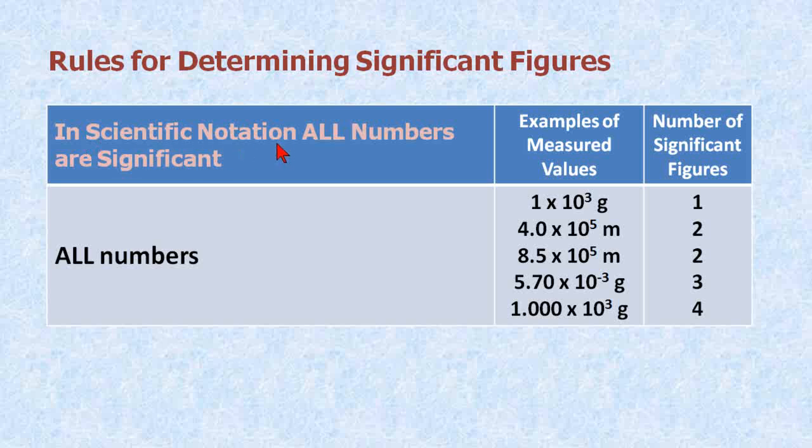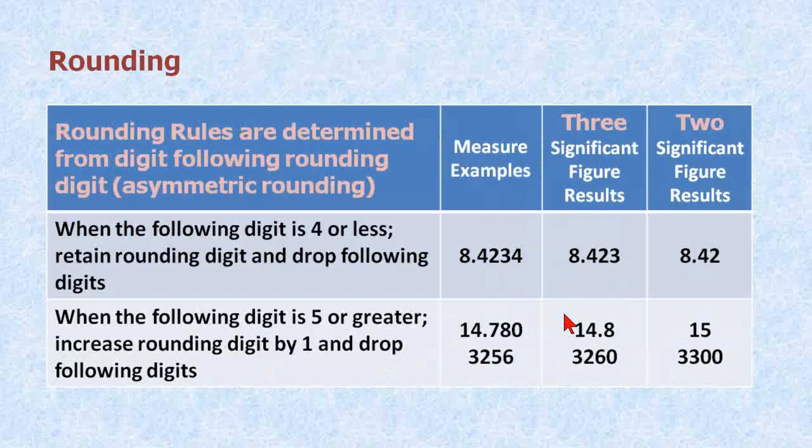And lastly, as we mentioned previously, in scientific notation, all numbers are significant. So if you want to express a number with the correct number of significant figures, you can always resort to scientific notation. For example, the number 1,000 could be expressed as 1.000, which has four significant figures, and you could also write it as 1.000 and place a decimal point there.